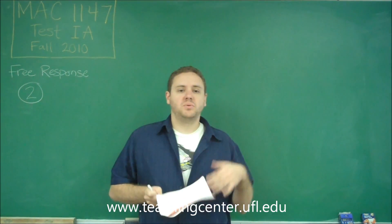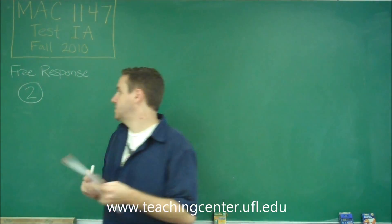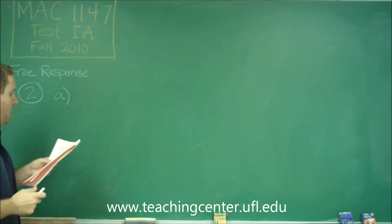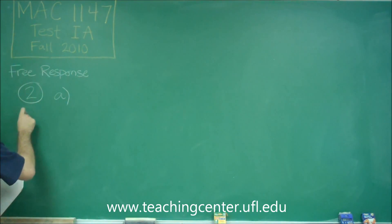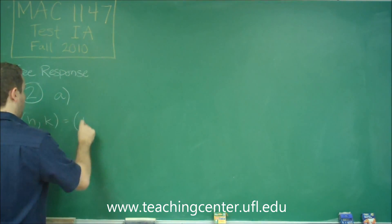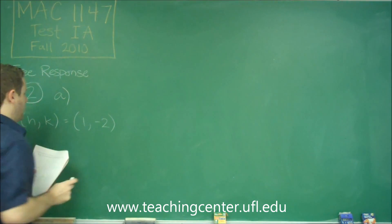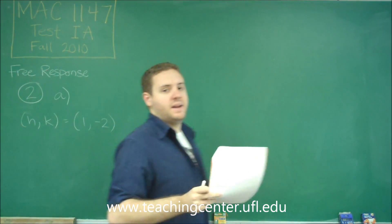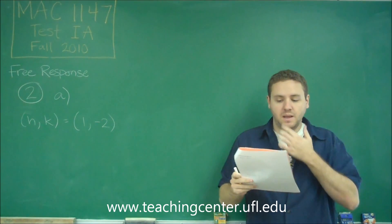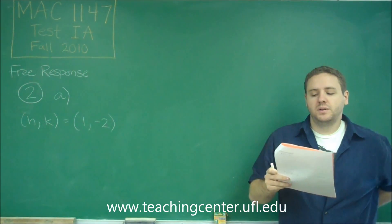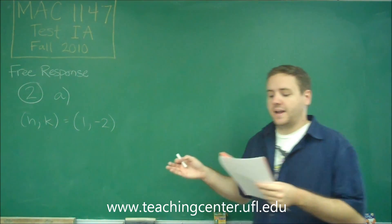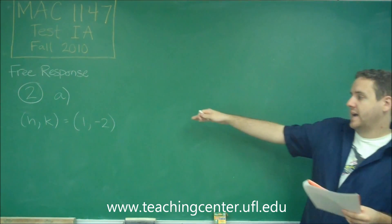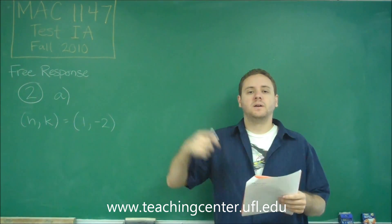Okay, so for number two we're going to be working with the equations of a circle. Let's start with letter A here, and we have given that the center of the circle is (1,-2). So our line going through (1,-2) goes from (3,-1) to (x,y).